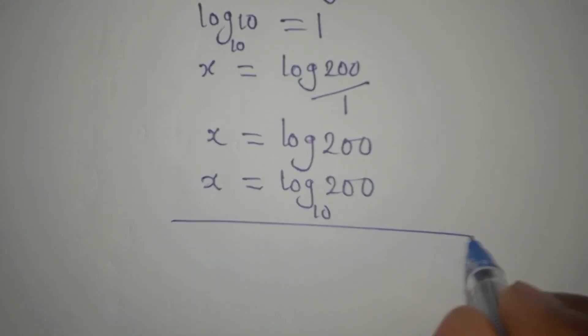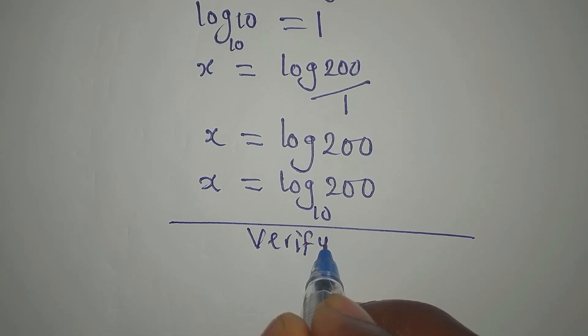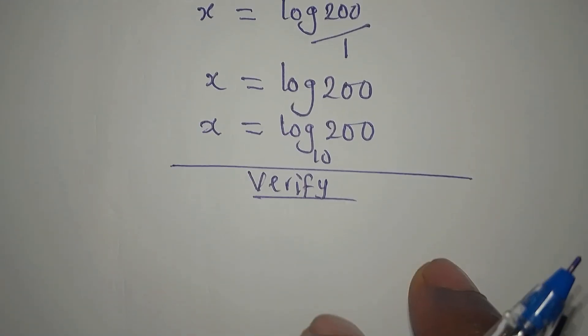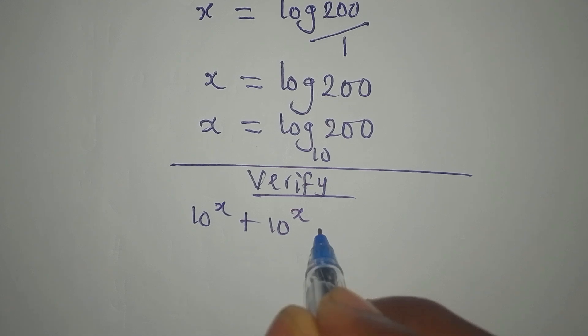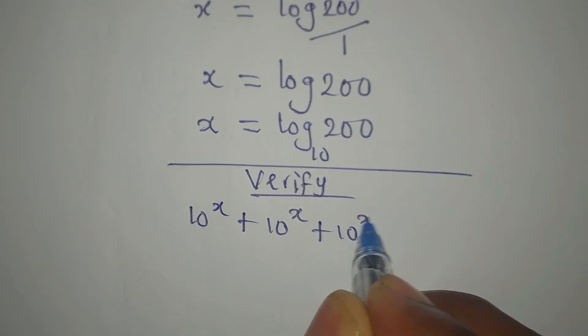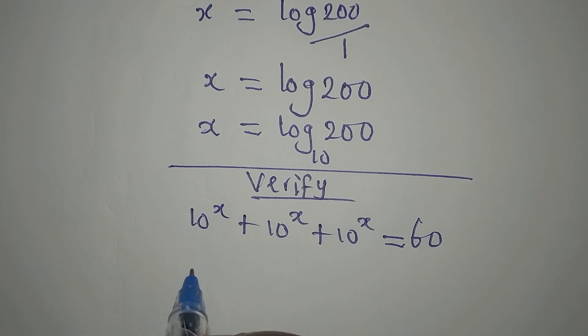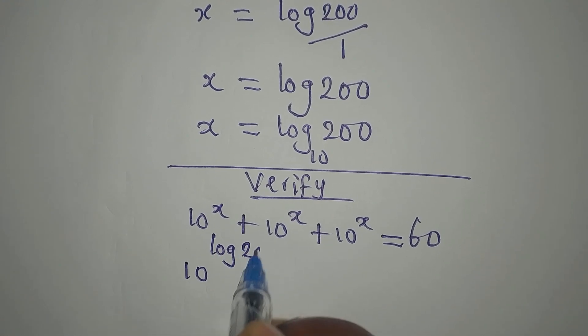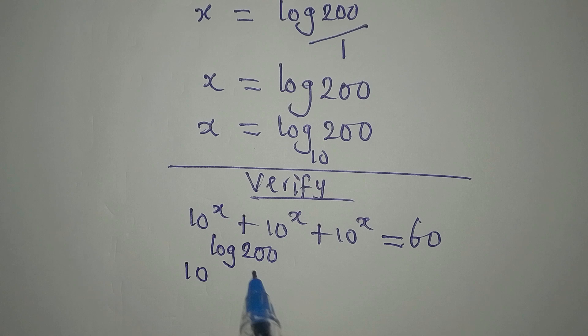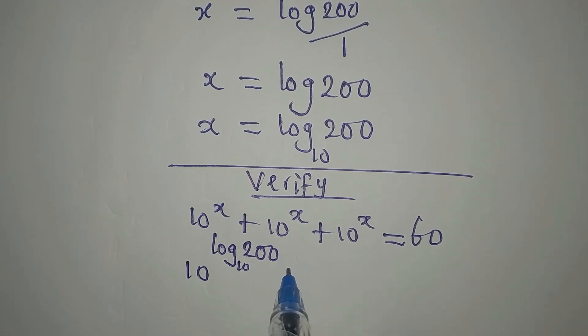But like we always do, we always verify our answer. I can write this as log 200 to base 10, this is natural logarithm. Now let us verify. We had 10 to the power of x plus 10 to the power of x plus 10 to the power of x equals 600.